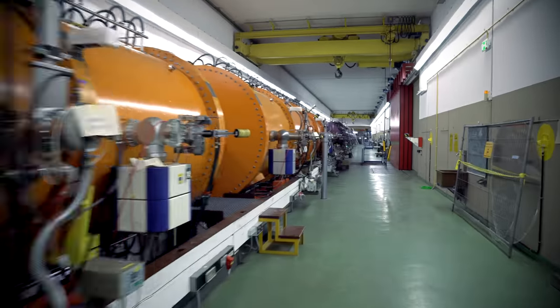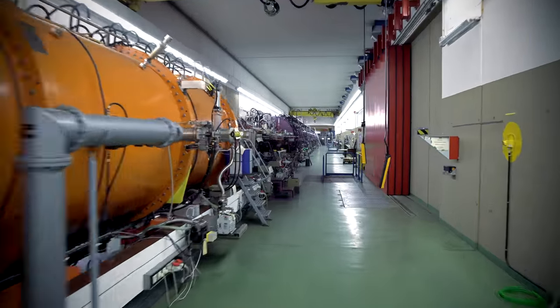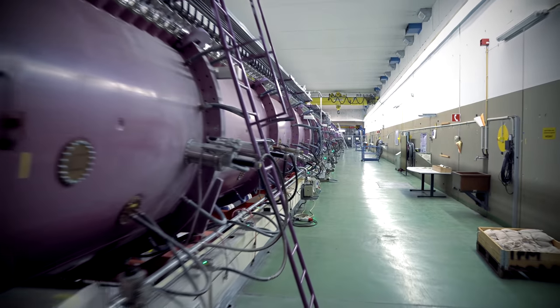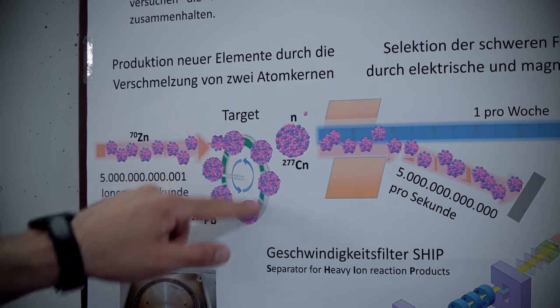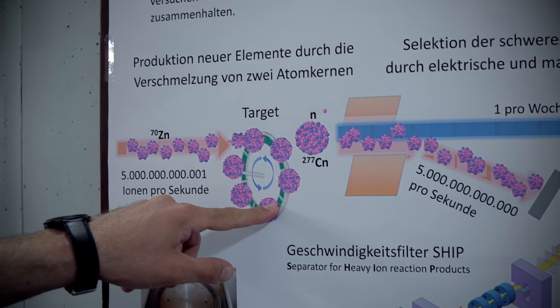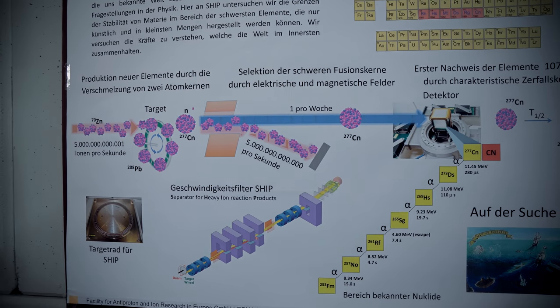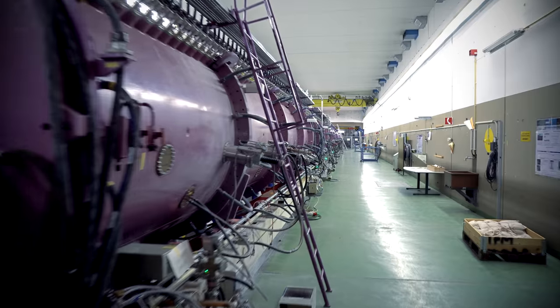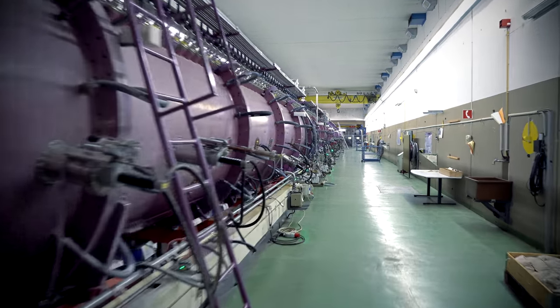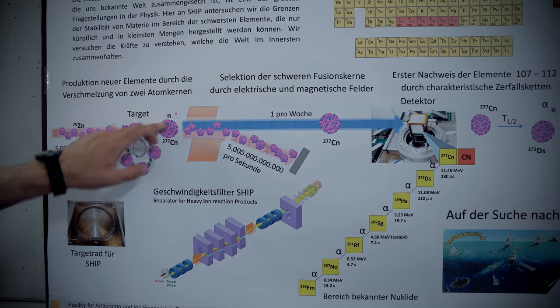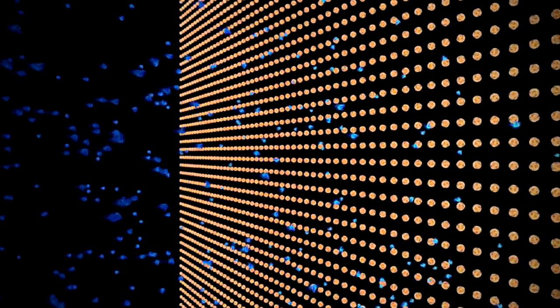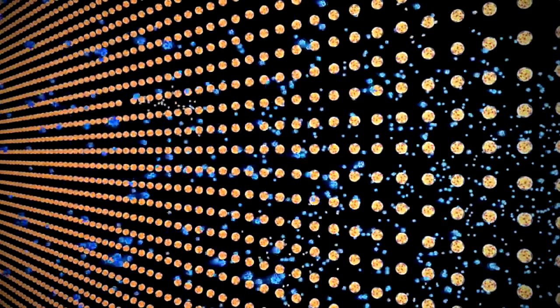This metal was created by bombarding atoms of lead with ions of zinc accelerated to one-tenth of the speed of light through a linear accelerator named Unilac. About 5 billion flying ions of isotope zinc-70 were fired at high speed at the motionless lead-208 target in the form of a thin foil.